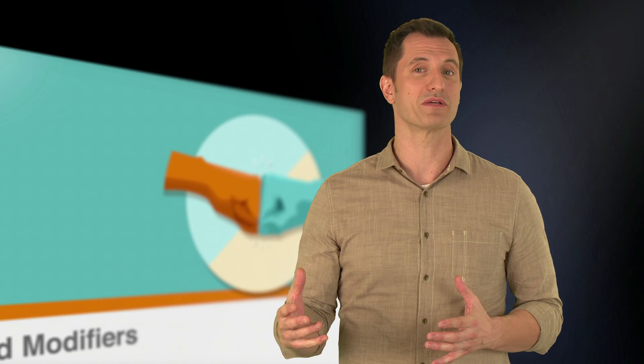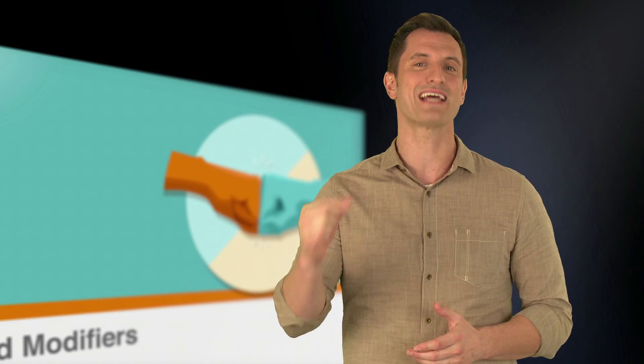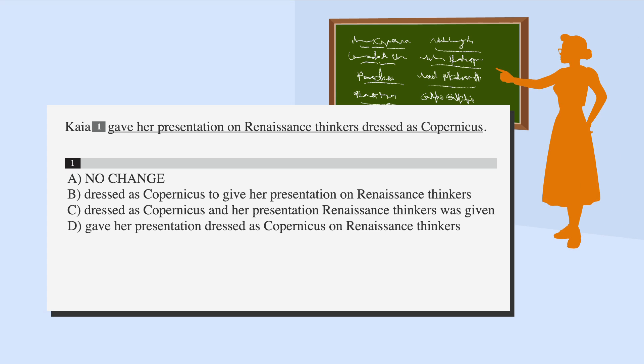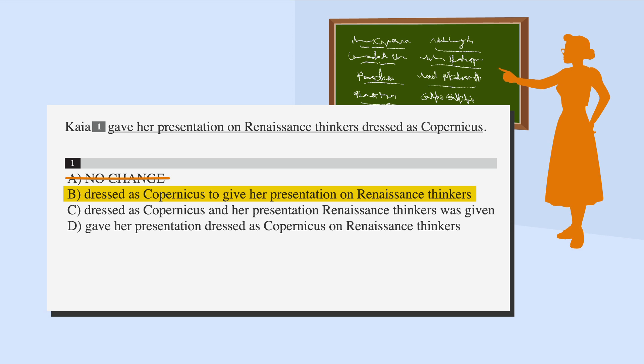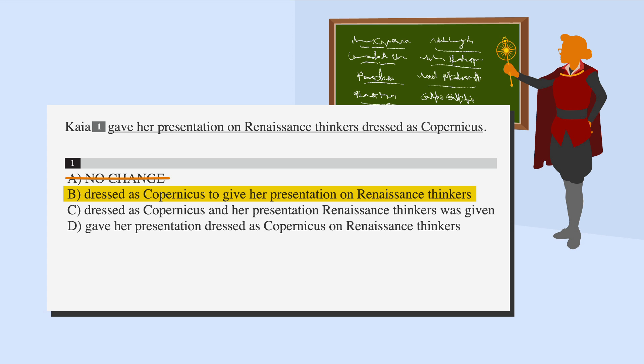Now that we've learned about misplaced modifiers, let's look at an SAT example testing this knowledge. 'Kaya gave her presentation on Renaissance thinkers dressed as Copernicus.' Our answer choices are variations of the underlined portion of the sentence. A change is definitely needed because it sounds like Kaya's presentation was on Renaissance thinkers who dressed like Copernicus, so we can cross out answer choice A, which suggests no change. Answer choice B suggests that Kaya dressed as Copernicus to give her presentation on Renaissance thinkers, which is perfect. Moving the modifier 'dressed as Copernicus' right after the noun Kaya corrects the sentence.